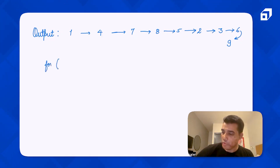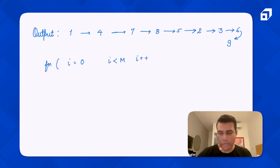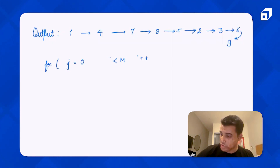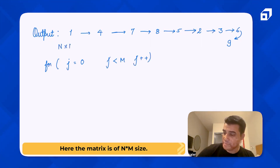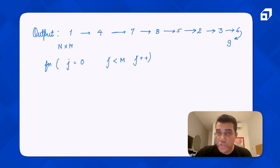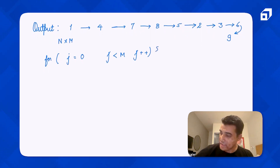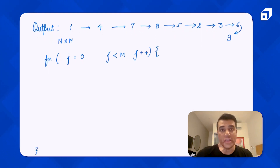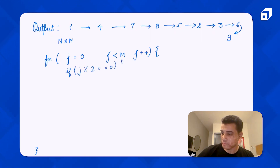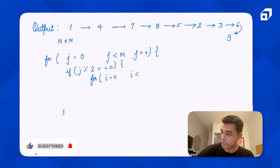We go column by column, so we start with j equal to 0, j is less than m, j plus plus. We can use the usual variable for traversing columns of a matrix. The matrix is of n cross m size, so the columns loop goes from 0 all the way to m-1. Then we traverse each column: if the column value is even, so if j modulus 2 is equal to 0, then we traverse the row from 0 to n-1.